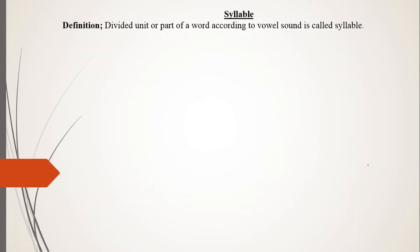The definition of syllable is: a divided unit or part of a word according to vowel sound is called a syllable. What do we mean by a divided unit or part of a word according to vowel sound? That is called a syllable.